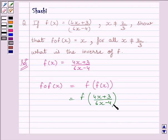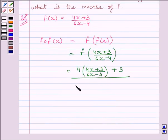This is equal to 4 multiplied by (4x + 3)/(6x - 4) plus 3, all over 6 multiplied by (4x + 3)/(6x - 4) minus 4.